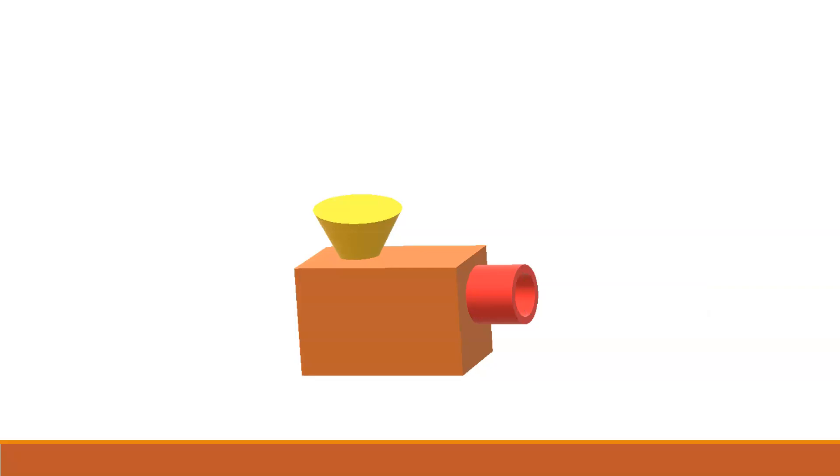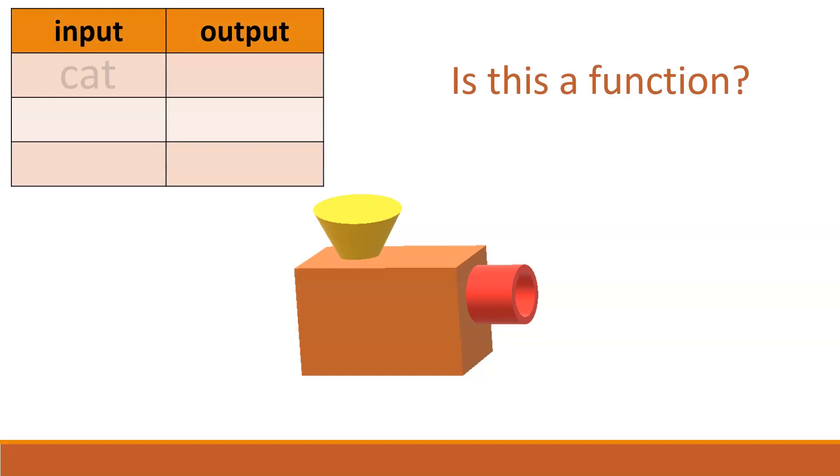Is that a function? Well, the input of cat did give us an output of c the first two times, but the third time the input of cat gave us an output of t. So we've got a little confusion here. What output really corresponds to an input of cat? Since there's some confusion, and the input of cat gives us different outputs, this one's not a function.